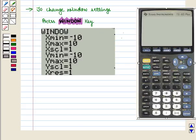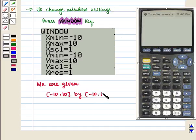And we get the following display on the screen. Here we can see that we are given a window from [-10, 10] by [-10, 10].